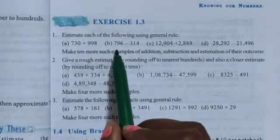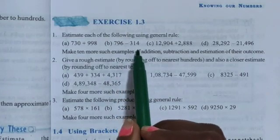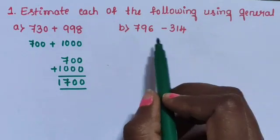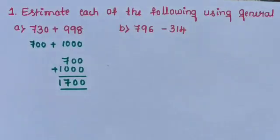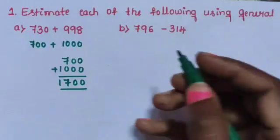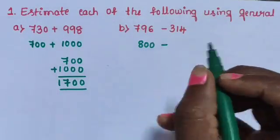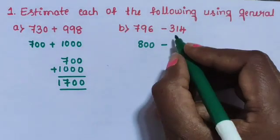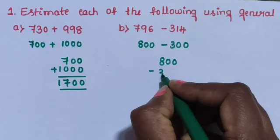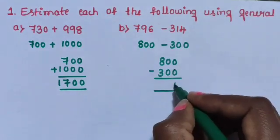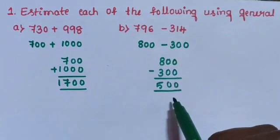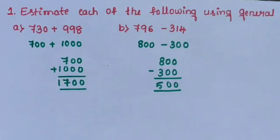Next, sub-question B: 796 minus 314. Estimate these two numbers and subtract. 796 rounds to 800, minus 314 rounds to 300. The difference of 800 minus 300 is 500. The answer is 500.